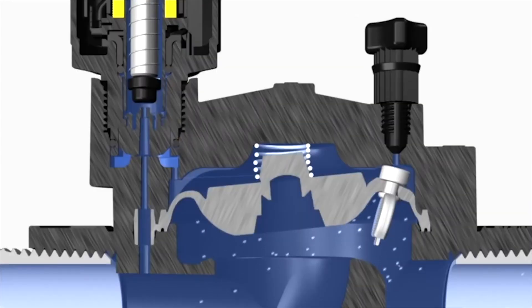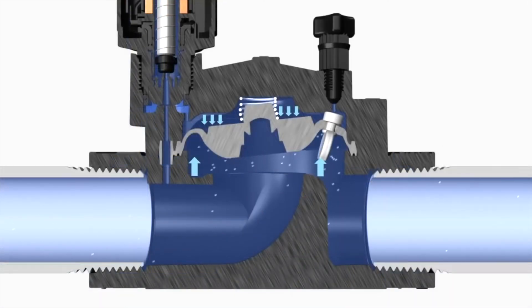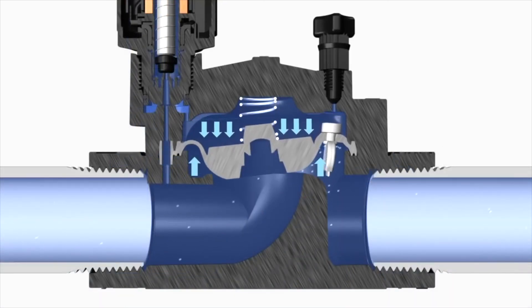When the controller turns off, the plunger drops back down causing the top of the diaphragm to have a greater force and the diaphragm closes, turning the zone off.